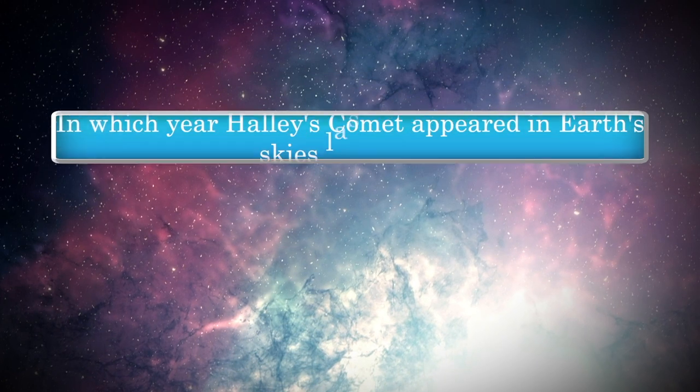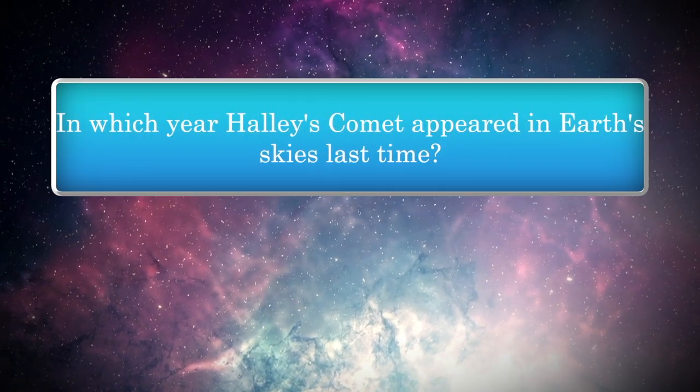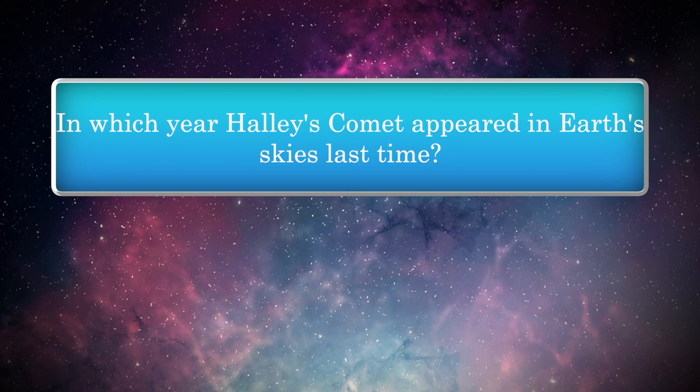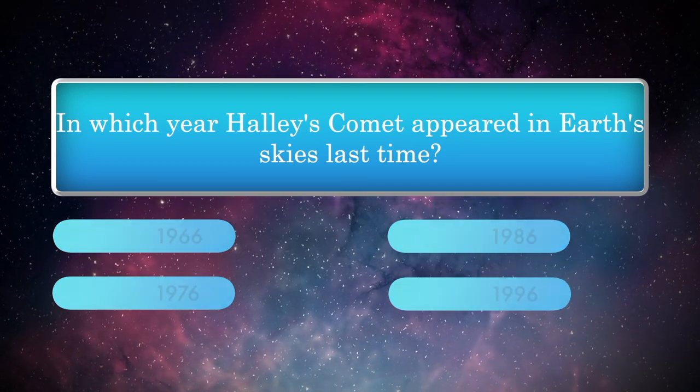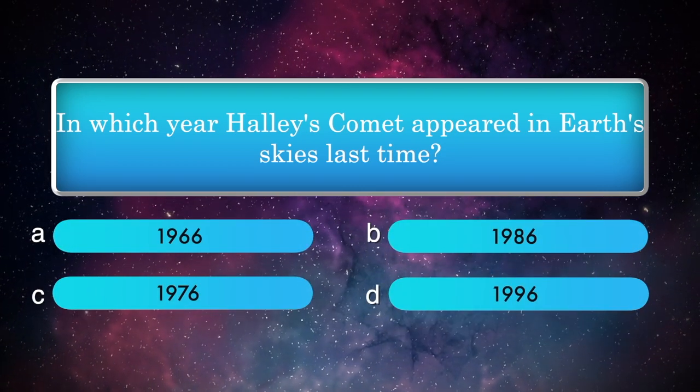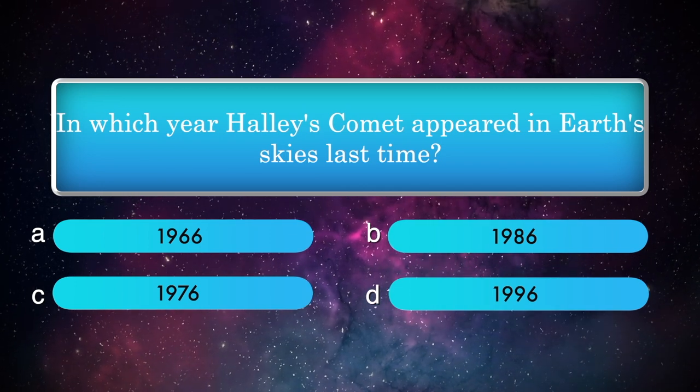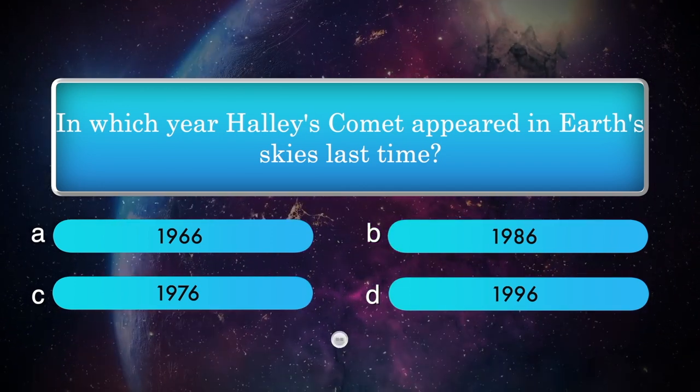In which year did Halley's comet appear in Earth's skies last time? Options: 1966, 1976, 1986, 1996.